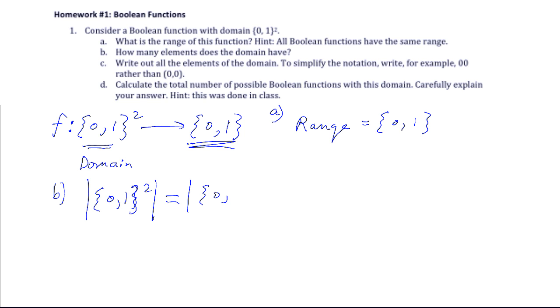When we square a set, we're really doing the cross product of that set with itself, and the size of a cross product is the product of the size of the sets. The size of each of these sets is 2, so the size of the domain is 4. This is a correct mathematical statement.